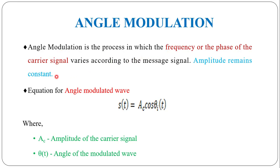When only the frequency of the carrier is varied with respect to the message signal, it is called frequency modulation. When the phase of the carrier signal is varied with respect to the message signal, it is called phase modulation. Generally, the angle modulated wave can be expressed as s(t) = Ac·cos(θi(t)).